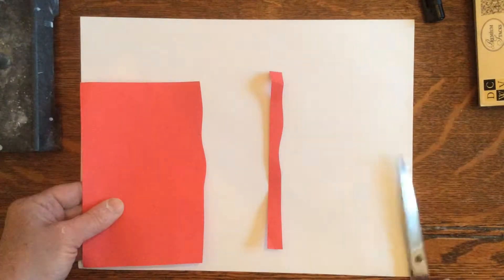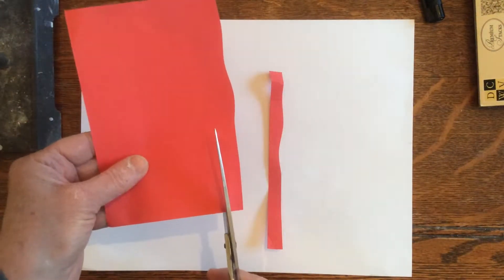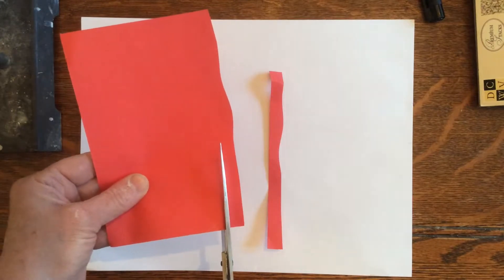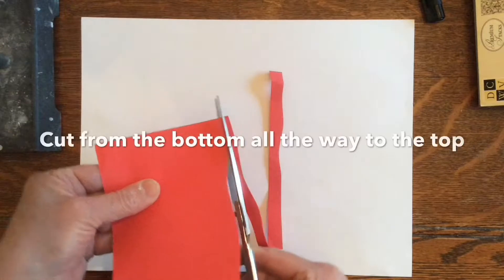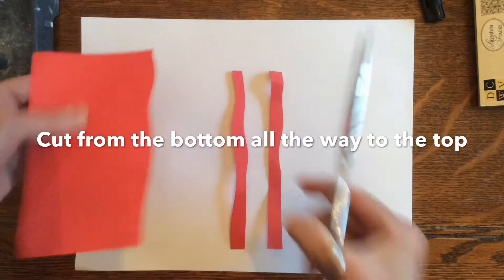When you're making your tentacles, you want them to be long and skinny. Starting at the bottom of your paper, put your scissors in a little bit and try to make a wavy line with your scissors.